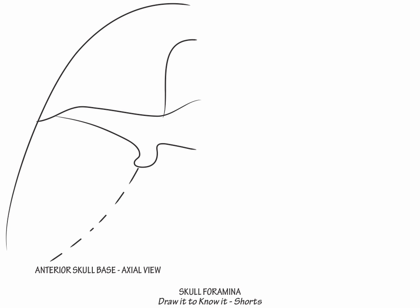Use brackets to show that the foramina of the cribriform plate of the ethmoid bone contain cranial nerve 1.